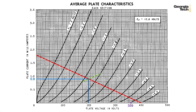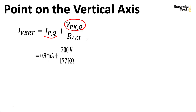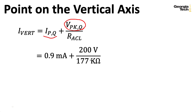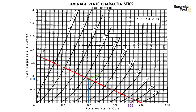Now we need a point on the vertical axis. We start at the DC operating point and travel 200 volts to the left, then use Ohm's law to figure out how much the current will rise. The point on the vertical axis is our quiescent current plus the voltage associated with our operating point divided by RACL. Plugging in: we start at 0.9 milliamps and add 200 volts divided by 177 kilohms, which gives us 0.9 milliamps plus 1.13 milliamps, giving us 2.03 milliamps — you could call this 2 milliamps and be happy.